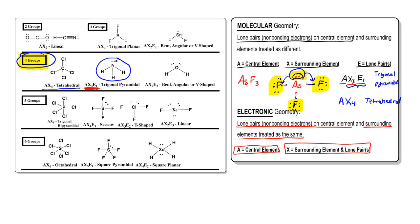Here are all the different types of shapes that you should commit to memory. If we go over them quickly, here we have two groups around the central element. They're surrounding elements, so that's AX2, which is linear. If you have three groups, there's two possibilities. One where all the surrounding elements make up the three groups, so that's AX3, or one where we have one lone pair and two surrounding elements, which would be bent, angular, or V-shaped.